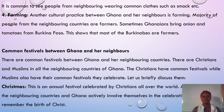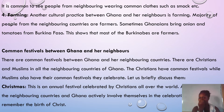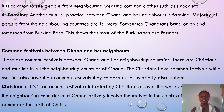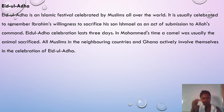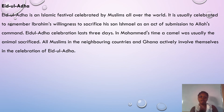It is common to see people from neighboring countries wearing common clothes. Farming is another cultural practice between Ghana and her neighbors. People from the neighboring countries are farmers — sometimes they bring onion and tomato from Burkina Faso, showing that most Burkinabes are farmers. Some festivals shared between Ghana and her neighbors include Christmas, because it is a religious festival and there are Christians in those countries, and Eid al-Adha, because there are Muslims in those neighboring countries who also celebrate it.